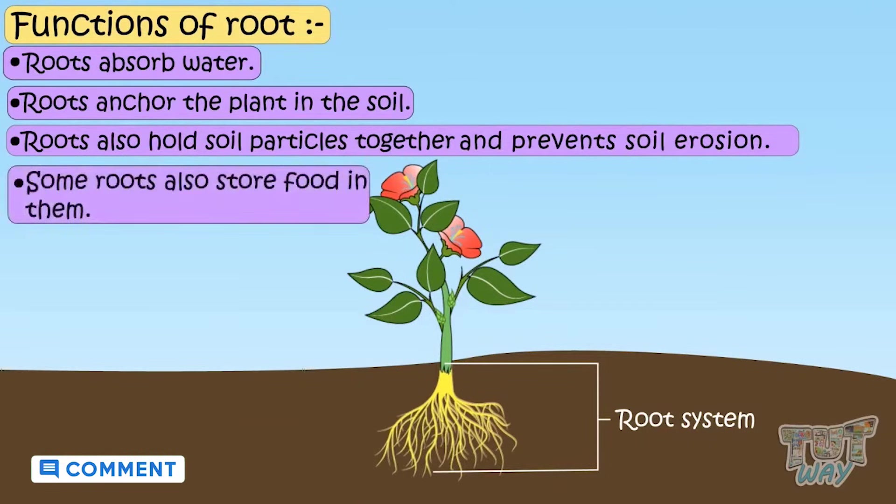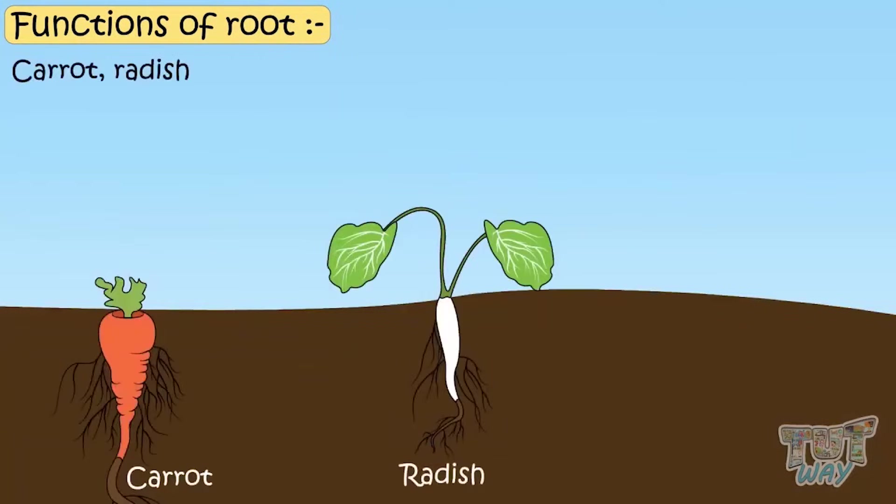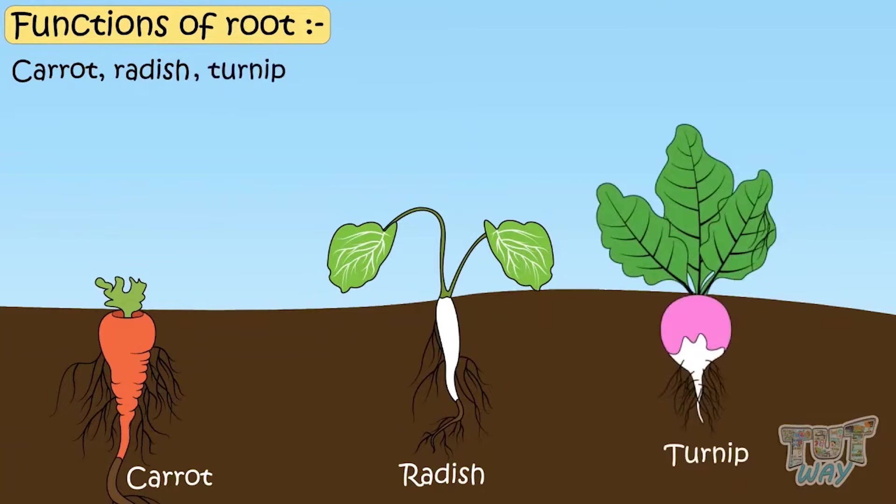Some roots also store food in them, like carrots, radish and turnips. Roots are tap roots that we eat.